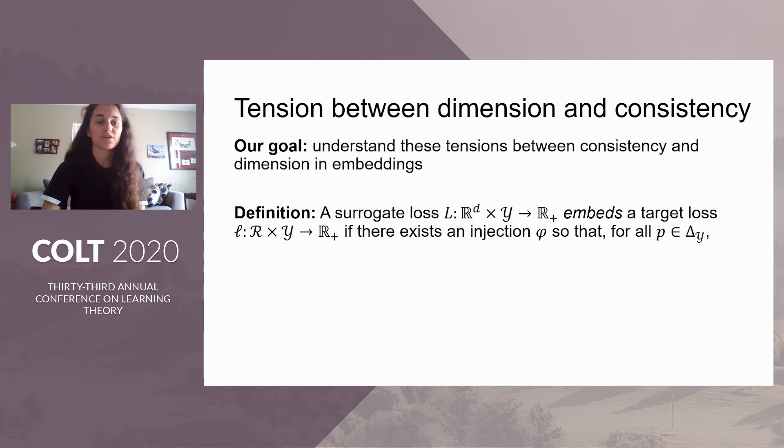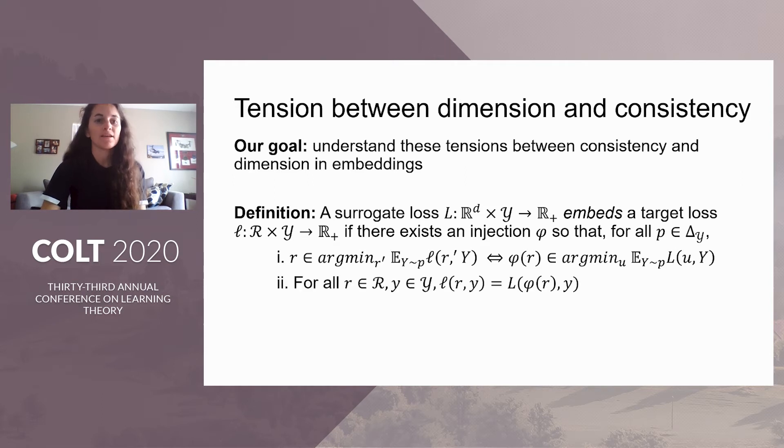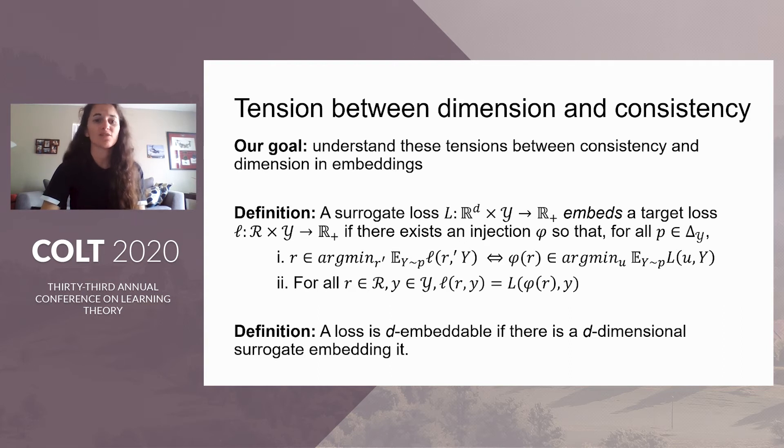We say that a surrogate loss capital L embeds a target loss little l if there's an injection phi, such that for all distributions over the outcome simplex, a report R minimizes the expected discrete loss if and only if its embedding minimizes the expected surrogate loss. And for all reports and outcomes, we require that the discrete and surrogate loss values match at R and the embedding of R, respectively. To have a concrete definition, we say that a loss is d-embeddable if there is a d-dimensional surrogate embedding it.